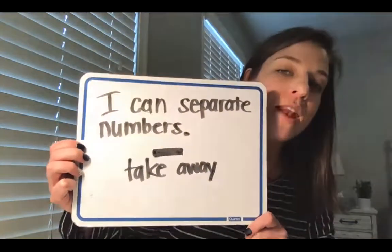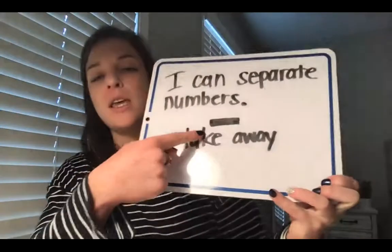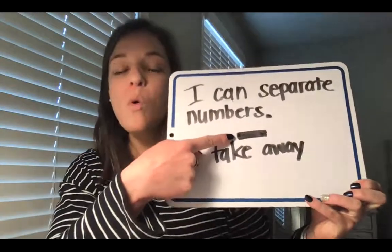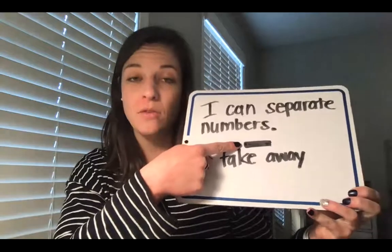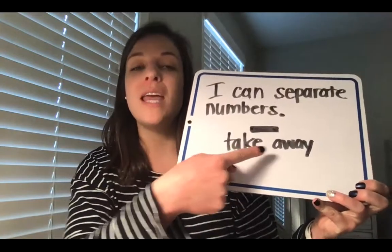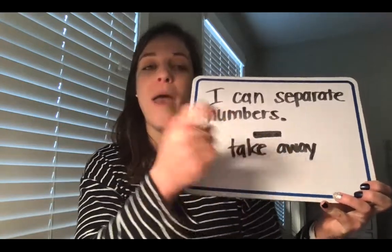Today we're going to work on our learning target that says: I can separate numbers. We're going to practice taking a whole group and breaking it into two parts and making it into a subtraction sentence. When we subtract, our number gets smaller — we start with a whole group, take some things away, and our number gets smaller. We know we're subtracting when we see the subtraction symbol, or what else can we call it — the minus sign. This tells us we're taking away.